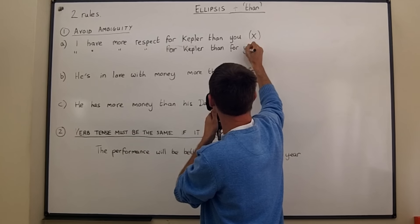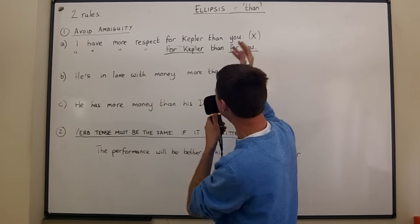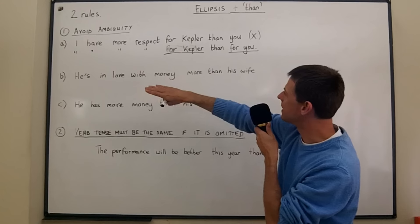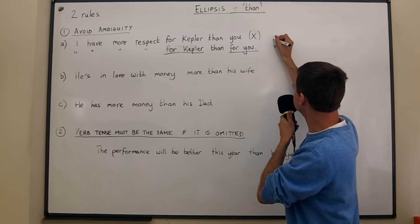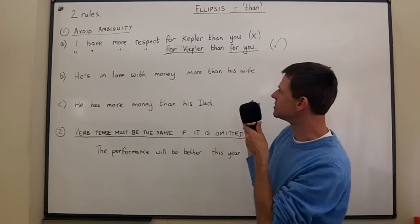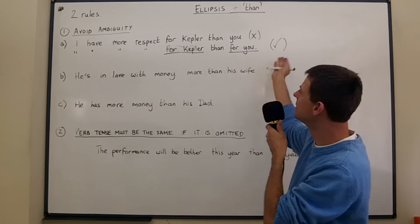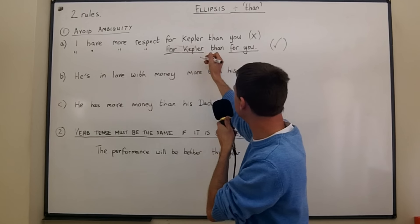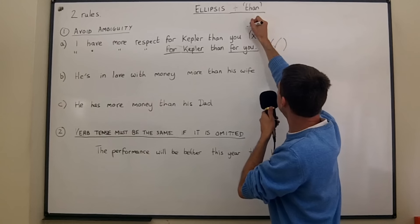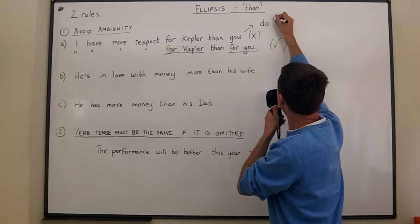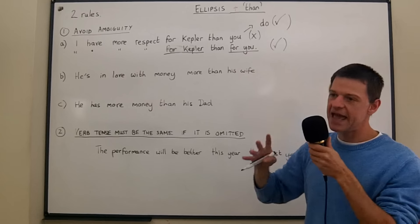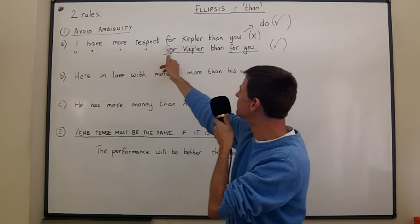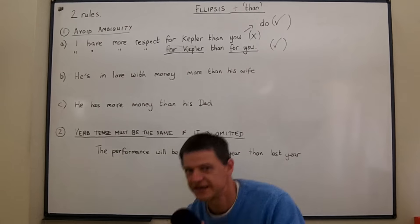We change it. If we want to compare Kepler and you, we say 'for Kepler than for you.' Notice the lovely parallelism — 'for Kepler' and 'for you' — evenly balanced on both sides of 'than.' It's very clear that I'm comparing the respect I have for Kepler with the respect I have for you. For the second meaning, comparing how much respect you have for Kepler versus how much I have, I add one small word: 'I have more respect for Kepler than you do.'